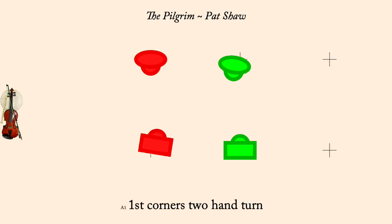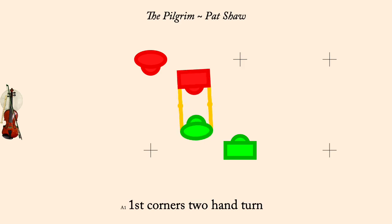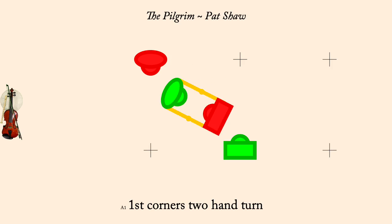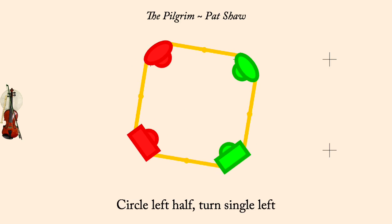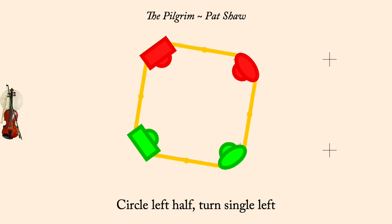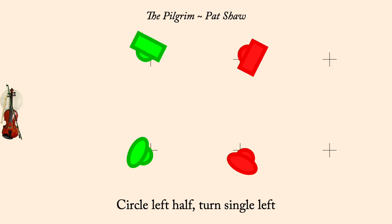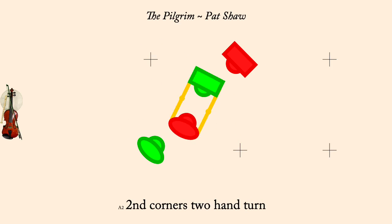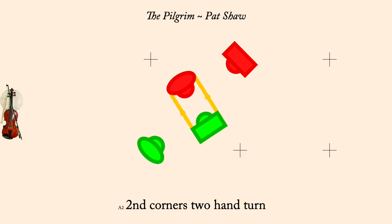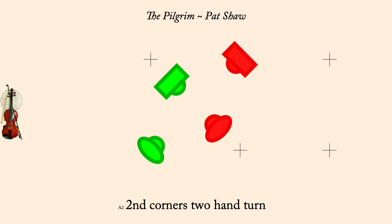First corners, two-hand turn. Circle left half, turn single left. Second corners, two-hand turn. Circle left half, turn single left.